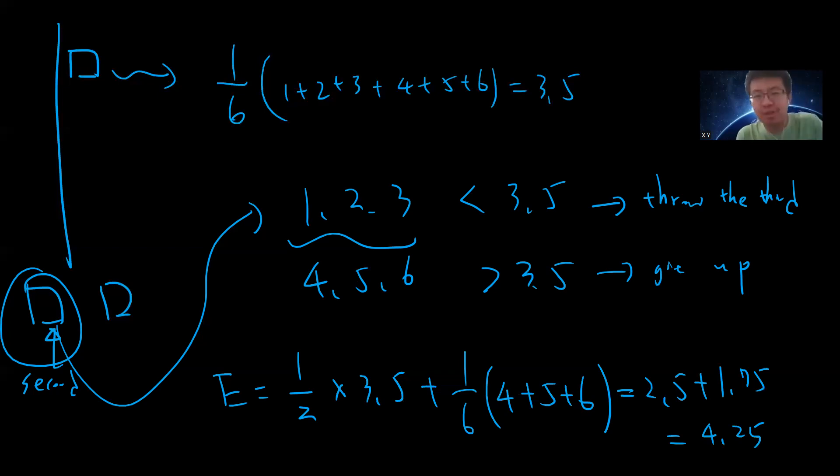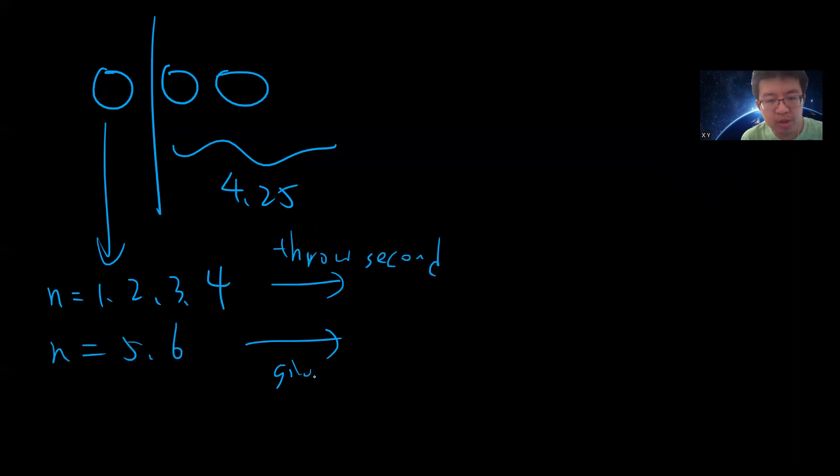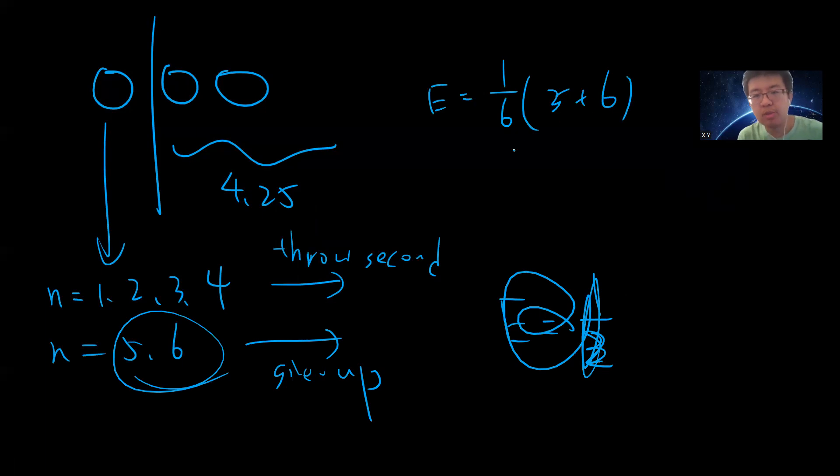Now you know the trick. What's our answer? Now we have three dice. The expectation value if you throw a second dice is 4.25. So if you got n equals 1, 2, 3, 4, then you will throw a second. If you only got 5 or 6, then you will give up and accept the result. This is the optimal strategy. So the expectation value will be 1 divided by 2 times (5 + 6), because you will give up, plus 4 divided by 6 times 4.25. This is for the 1, 2, 3, 4 case where you get the rest.